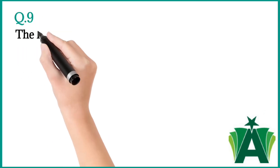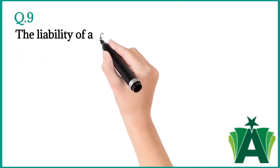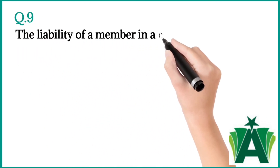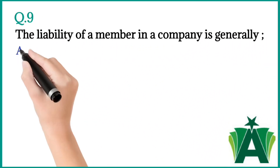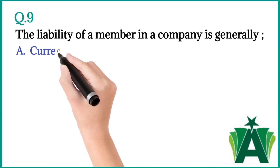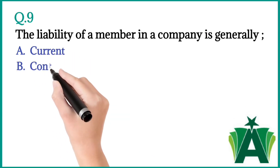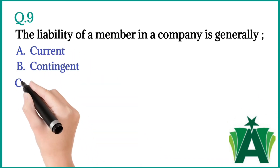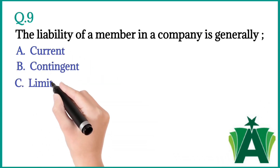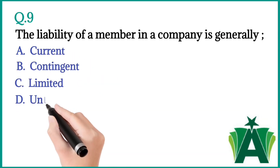Question number nine: The liability of a member in a company is generally — a) Current, b) Contingent, c) Limited, d) Unlimited. The correct answer is c) Limited.